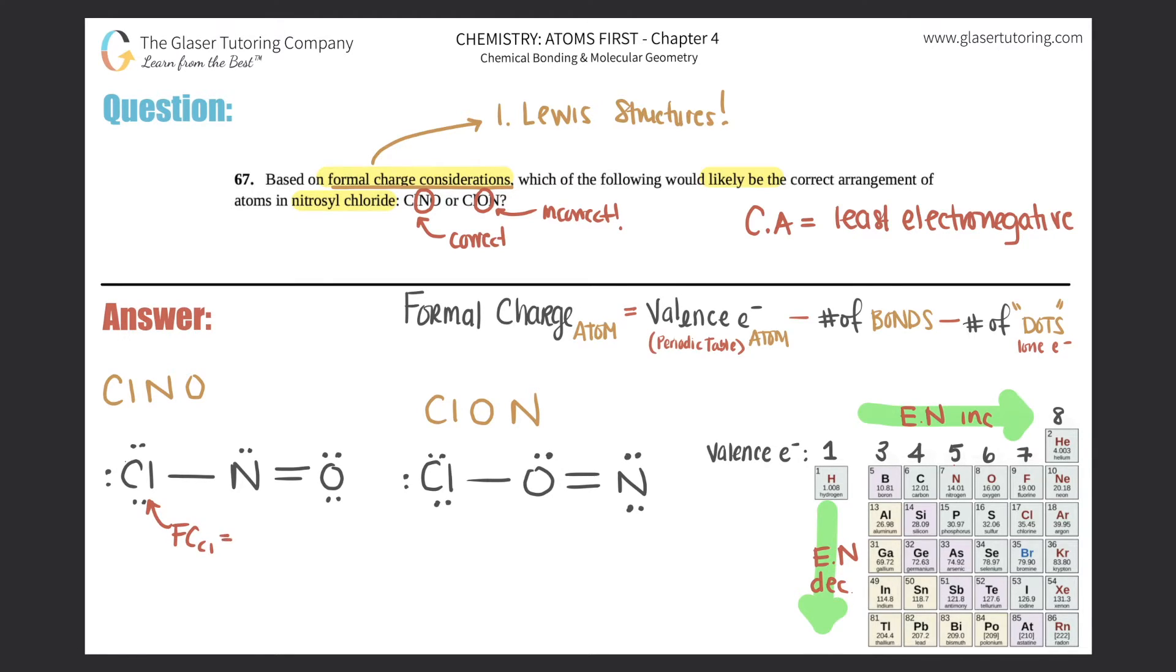So whatever we find out the formal charge of the one on the left, we know the one on the right. So for this chlorine, formal charge for chlorine would be valence electrons. Chlorine's over here on the periodic table. Chlorine has seven valence electrons. So we start off with seven minus number of bonds. Chlorine only has this one bond. So that's minus one minus number of dots, six dots. So that's minus six electrons. So seven minus one minus six is zero. So there's no charge coming from this chlorine.